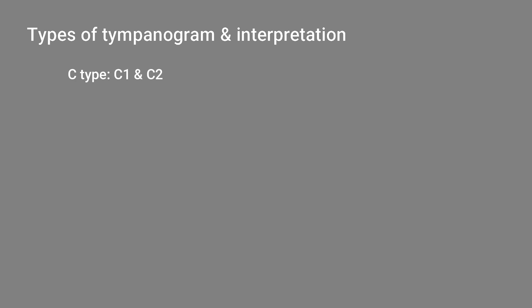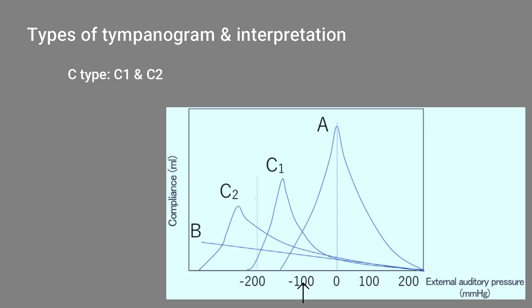Type C tympanogram can be divided into Type C1 and Type C2. In Type C1, the middle ear pressure is between minus 100 daPascal and minus 199 daPascal. In Type C2, the middle ear pressure is from minus 200 daPascal to minus 399 daPascal, meaning less than minus 200 daPascal.